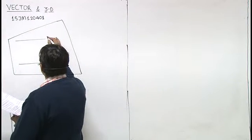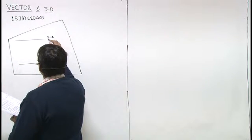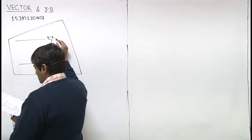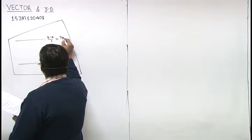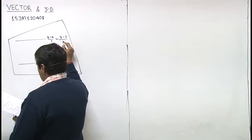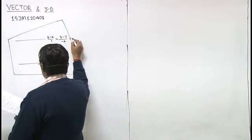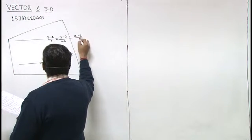The first line is x minus 4 upon 1 equal to y minus 3 upon minus 4 equal to z minus 2 upon 5.